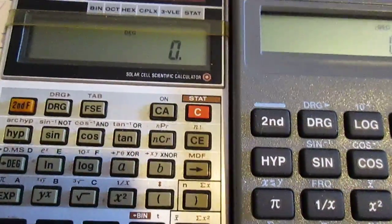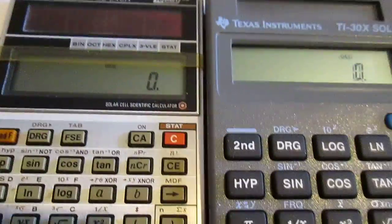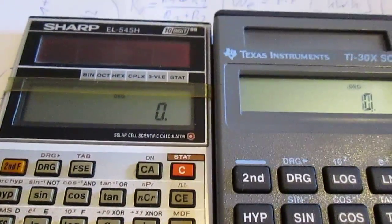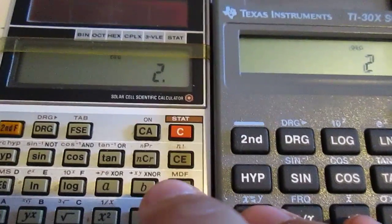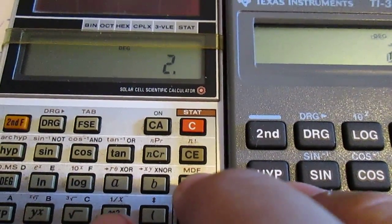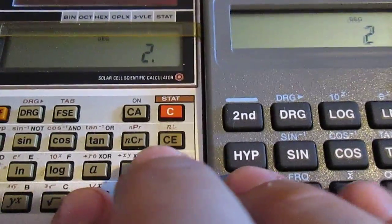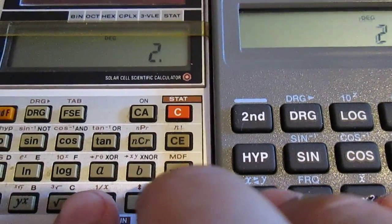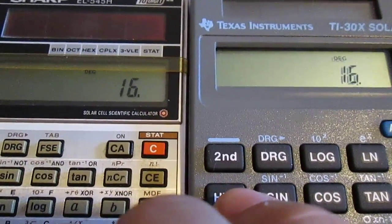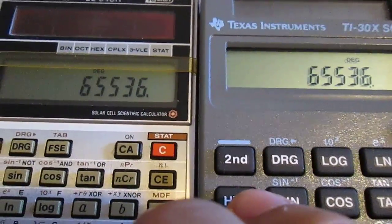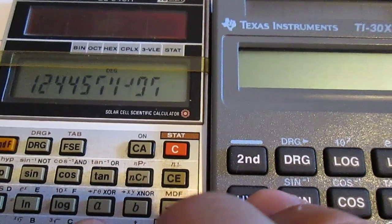What we can do is type digits. I would like to show you with the digit two, and of course it is possible to square these numbers. Here are the buttons, so we will do it. The first thing is that we see that the Sharp is a little bit faster, but it doesn't matter.